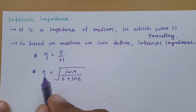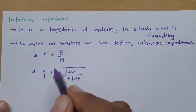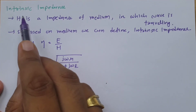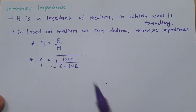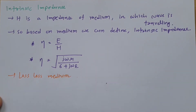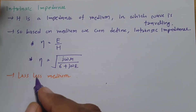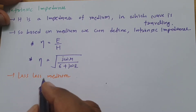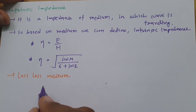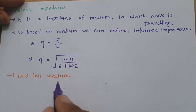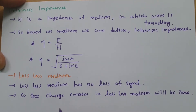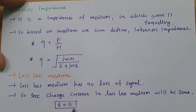I'll explain the calculation of intrinsic impedance for two mediums: lossless medium and lossy medium. For lossless medium, there is no loss of signal because it does not have any free charge carriers. Therefore, sigma equals zero for a lossless medium.